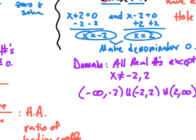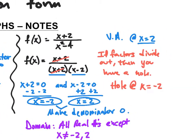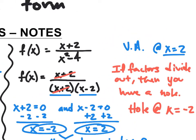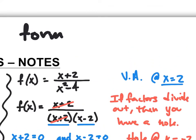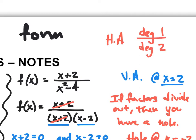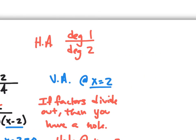To find the horizontal asymptote of this function, I look at the degrees — the degree is your largest exponent. The degree of the top is one, divided by the degree down below, which is two. Because the degree up here is small over big, the horizontal asymptote is going to be at the line y equals zero.